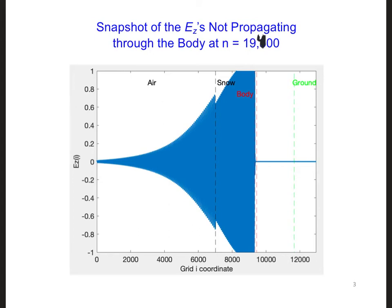Here's a snapshot I took of the electric fields across the grid at time step 19,400. In this plot it doesn't look like any of the wave is propagating past the body.